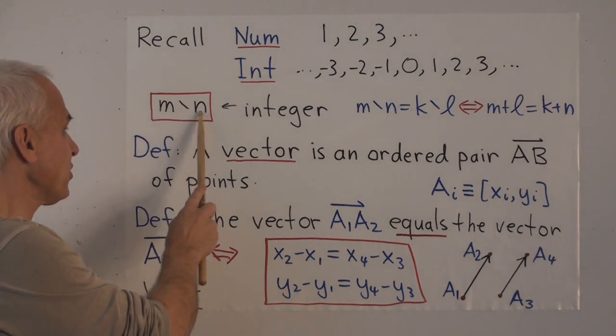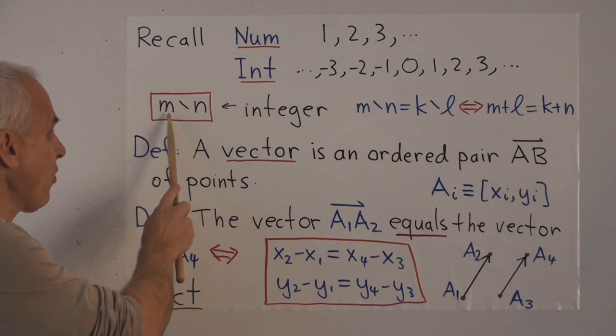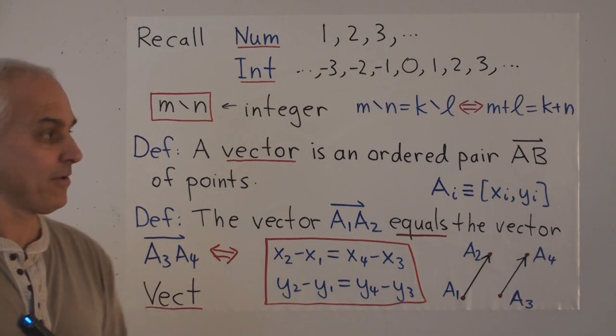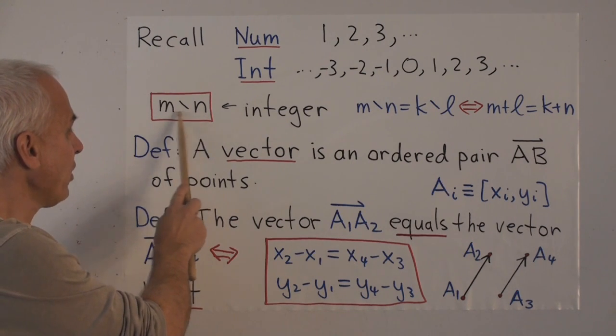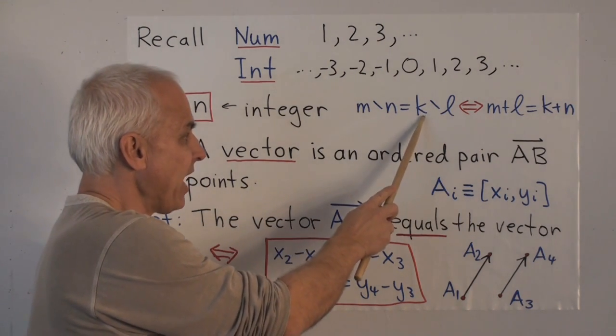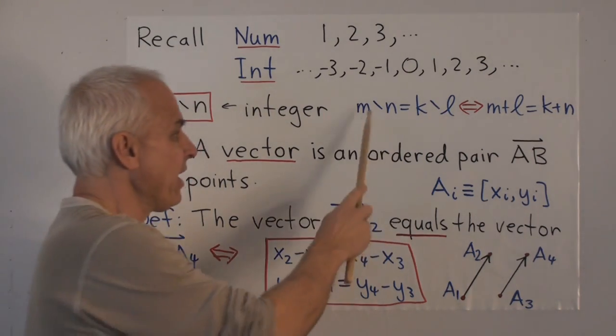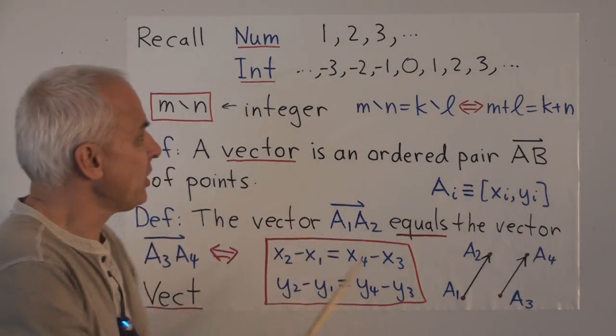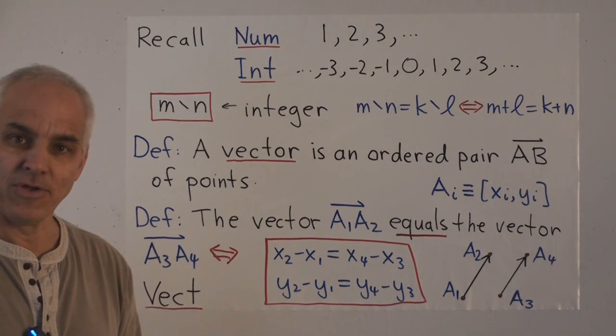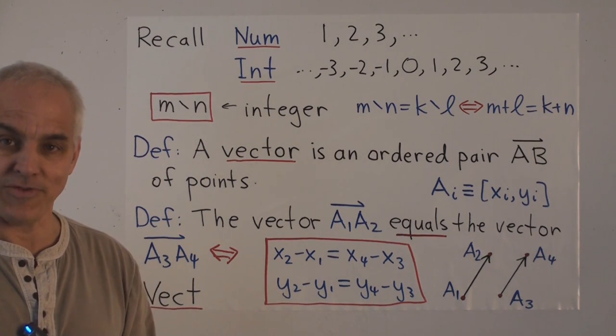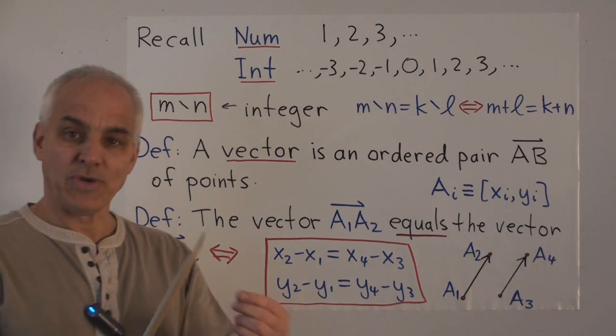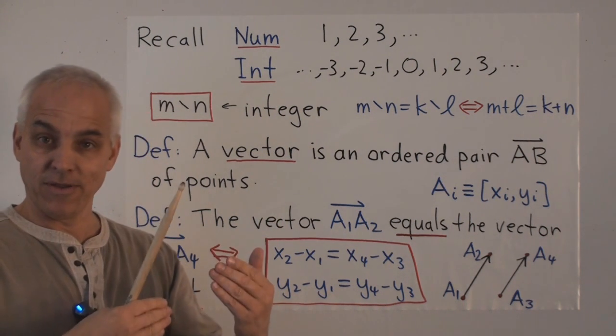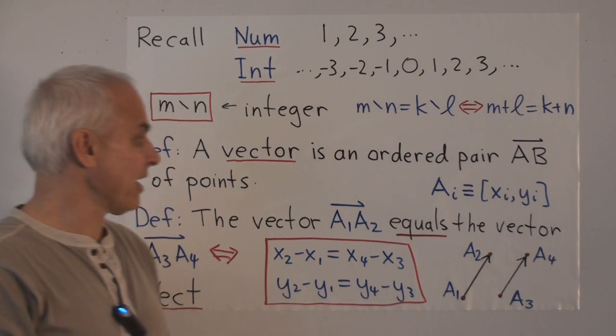What we did is we took pairs of natural numbers, m and n, and we wrote m less n to represent the integer that we would usually think of as m minus n. And we had a notion of equality between these things. So that m less n was equal to k less l, precisely when m plus l equals k plus n. So effectively, what we did is we used the differences between natural numbers to define what an integer was. Or to put it another way, an integer was really a pair of natural numbers, where it was the difference between those two natural numbers that encoded the integer. So that's a lot like what we're going to do with vectors.